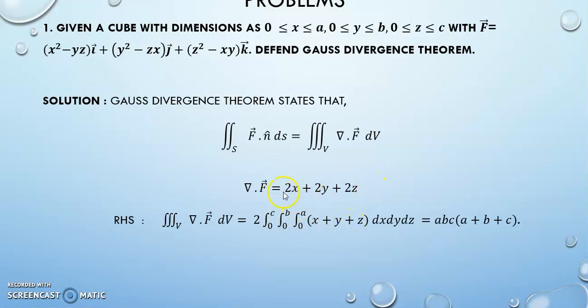So substituting that, taking 2 outside, 2 common, I have the limits as 0 to a, 0 to b and 0 to c. Integrating, I will be getting the answer as abc(a + b + c). You know how to evaluate the volume integration.